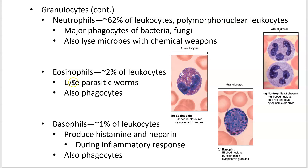Eosinophils are phagocytes, but their main job is to lyse or pop parasitic worms — tapeworms, roundworms, flukes. You likely have a population of worms that aren't hurting you, but eosinophils are there to deal with them. All three granulocytes — neutrophils, eosinophils, and basophils — include phagocytosis, though it's not the primary role for eosinophils or basophils.